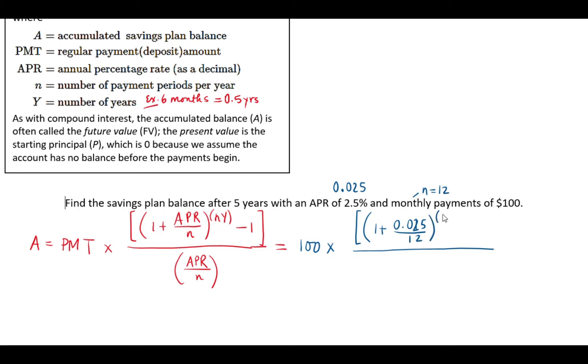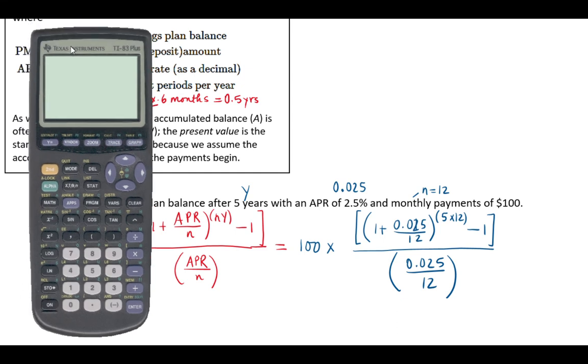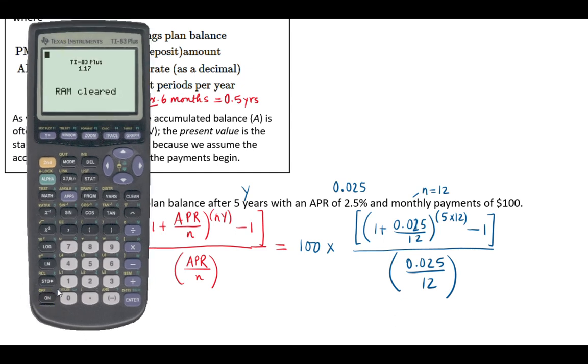And raised to the power, the exponent, I have 5 times 12 because that's like five years, so this is Y minus 1 according to the formula. And then I have 0.025 divided by 12. Now we're going to plug this into the calculator. I'm going to show you how you do this on the calculator, I'm going to use TI-84 for this purpose.